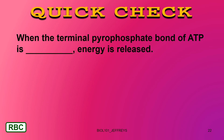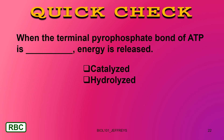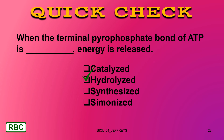Quick check: when the terminal pyrophosphate bond of ATP is blank, energy is released. What are we doing to that bond? Choices are hydrolyzed, synthesized, or simonized. We're going to cleave the terminal phosphate bond — how? Hydrolysis, you add water. So if you answered hydrolyzed, you're absolutely correct.